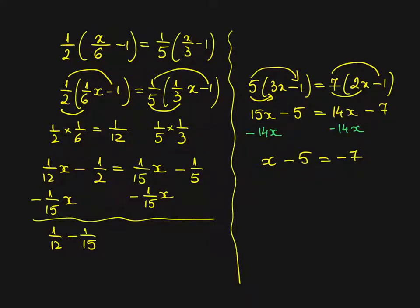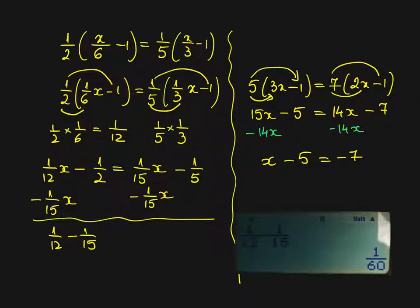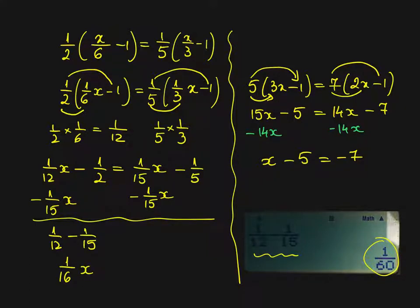I can do this using my calculator. So I can see that 1 over 12 minus 1 over 15 is 1 over 60. So I have 1 over 60x, remember there are x's, minus 1 over 2 equals. Look from here, this one will disappear. I'm left with minus 1 over 5.